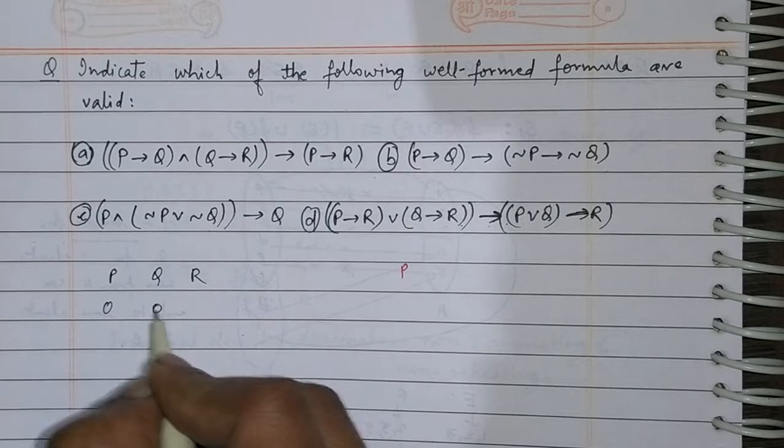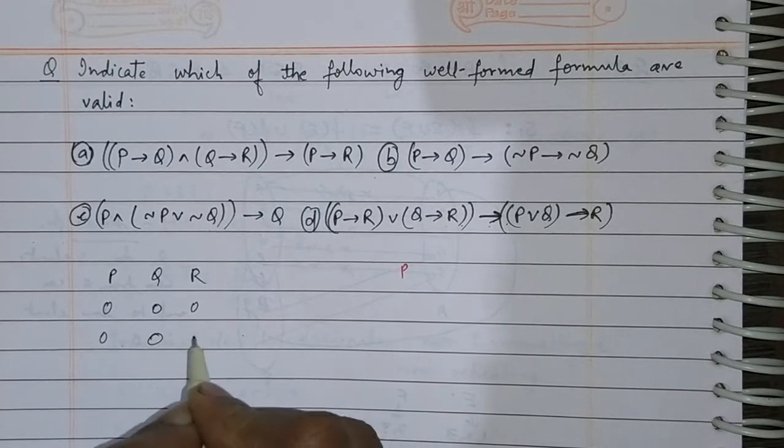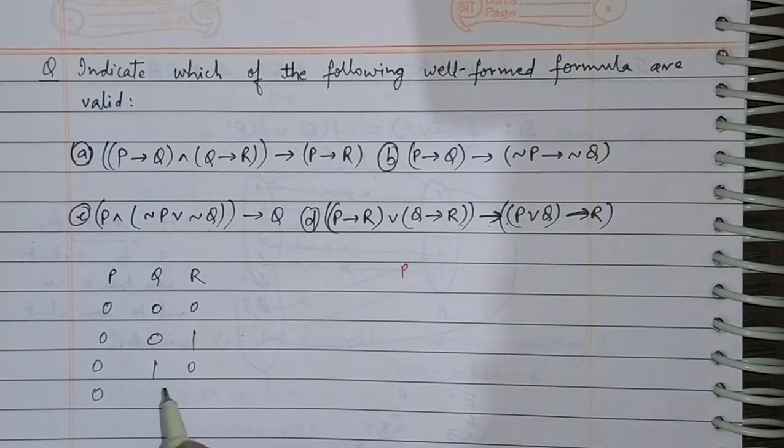The truth table rows have values: false, false, false; false, false, true; false, true, false; false, true, true — covering combinations for P, Q, and R.